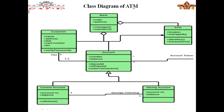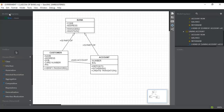Now we will go to StarUML. I have already made three classes: bank class, customer class, and account class. We have also seen the aggregation — account is part of bank, customer is part of bank. I have made this diagram previously, and one or two more classes we will make here. We have also seen that customer and account have an association relationship, and after that we will make the generalization and specialization.